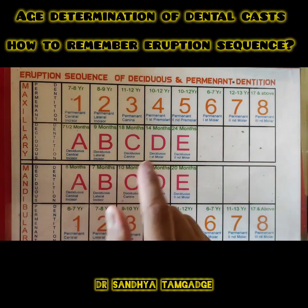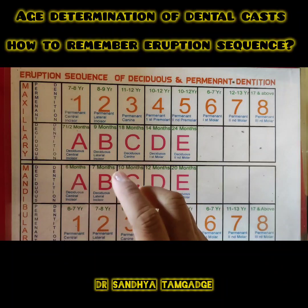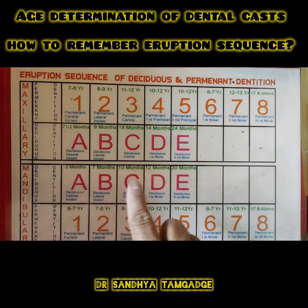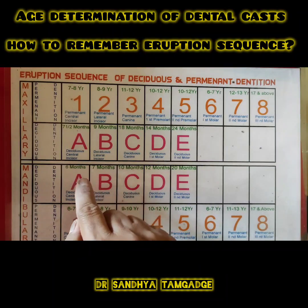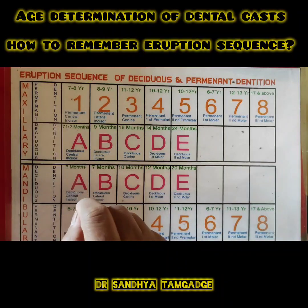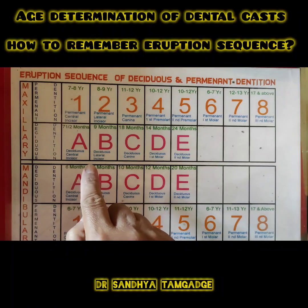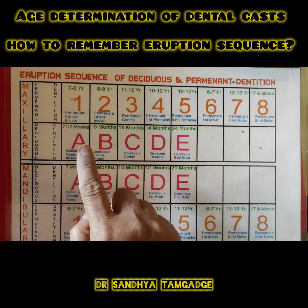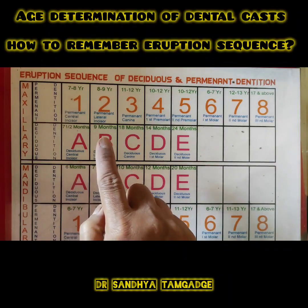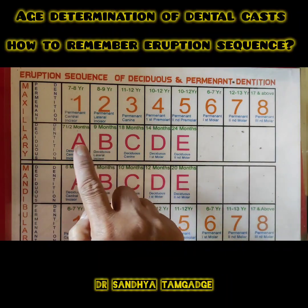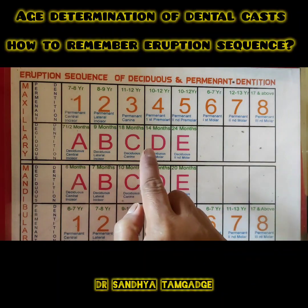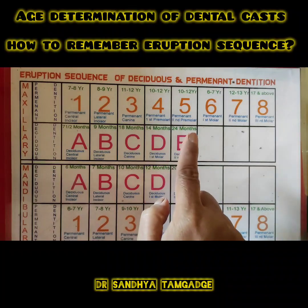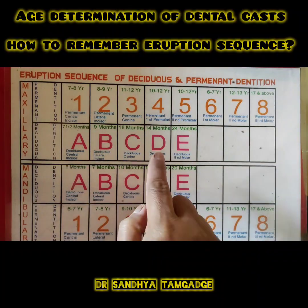Teeth erupt in batches. In the deciduous set, the first tooth erupts at six months. When a baby is edentulous, the first sign of eruption is the lower central incisor. In the chart, A is incisors (upper and lower), B is lateral incisor, C is deciduous canine, and D and E are deciduous molars — five teeth in each quadrant.